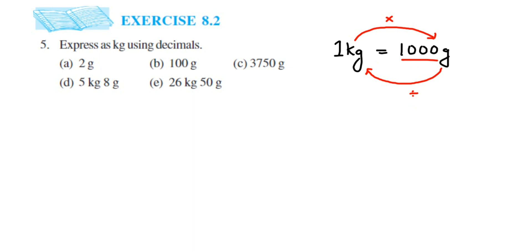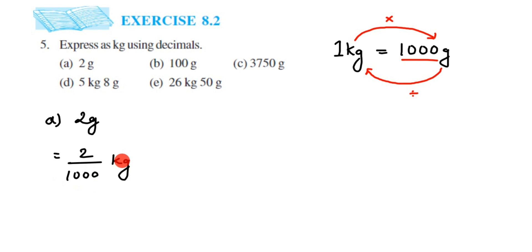The first question: we have 2 grams, so this equals 2 divided by 1000 kg. I have written kg here because I divided by one thousand — if you write grams the value and unit would be wrong. When dividing by one thousand, make sure you change the unit from grams to kilograms. In your fourth or fifth class you learned how to divide a number by ten, hundred, or one thousand in the decimal chapter.